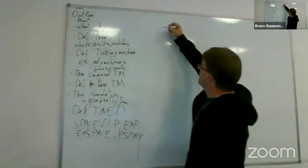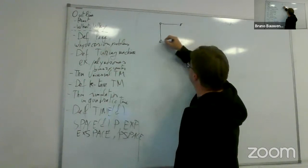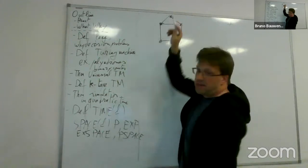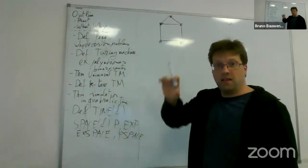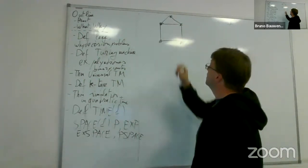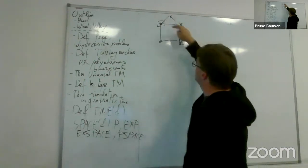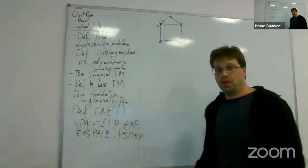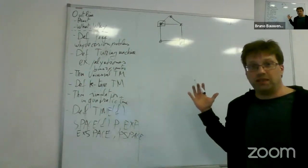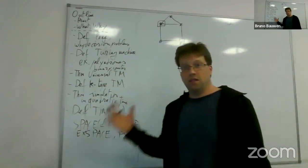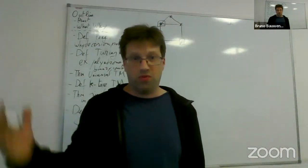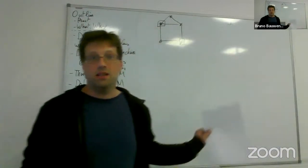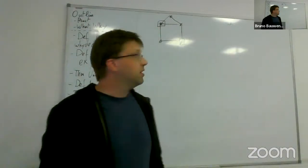Does this graph have an independent set of size 3? No. Two nodes form an independent set of size 2, but to get size 3, you'd have to pick conflicting nodes — it's not possible with this graph. This graph does not have an independent set of size 3.